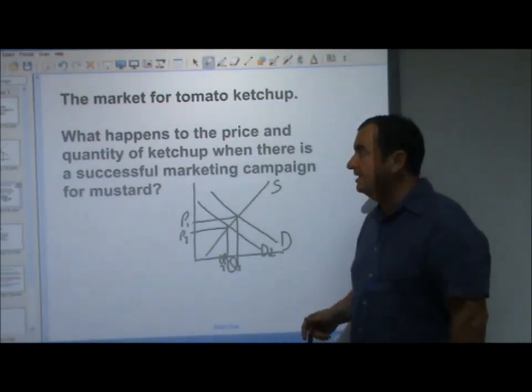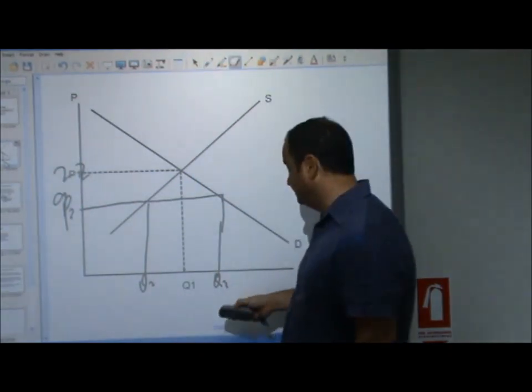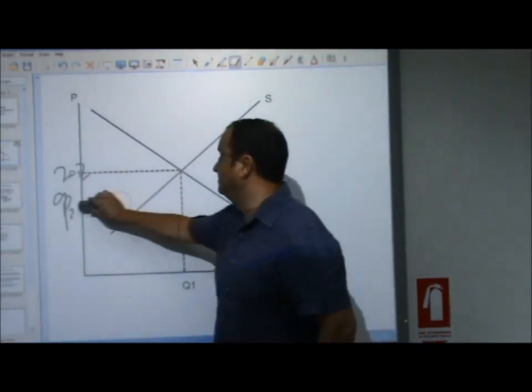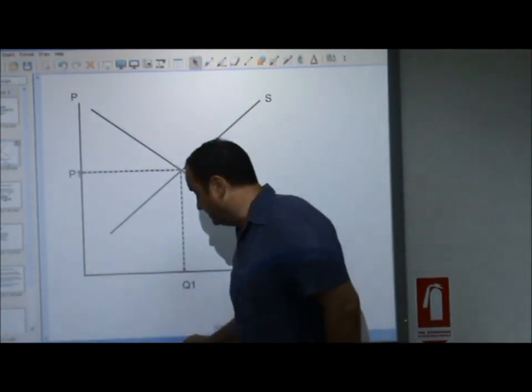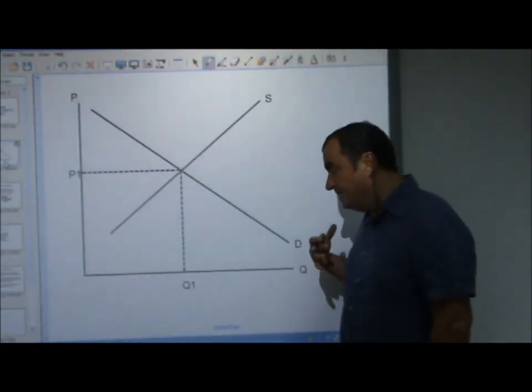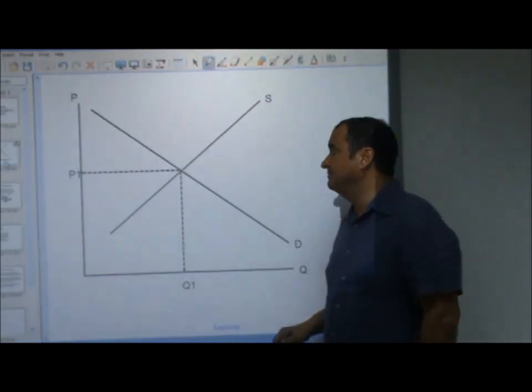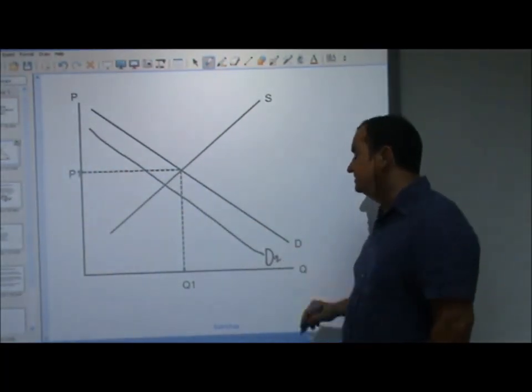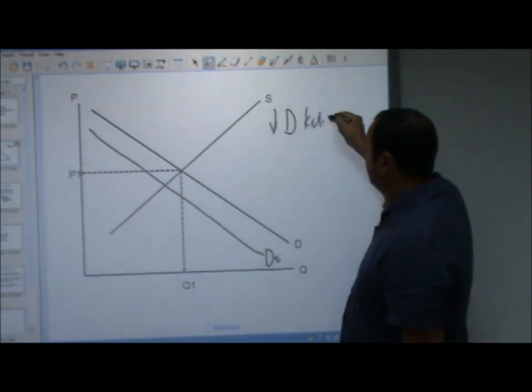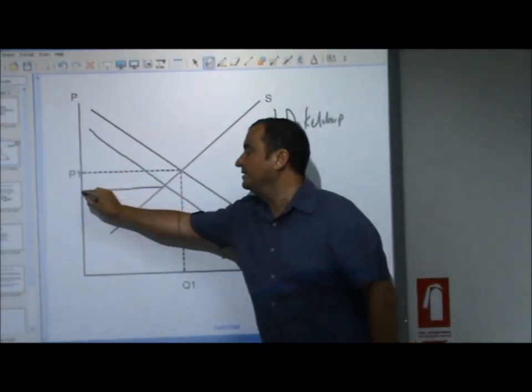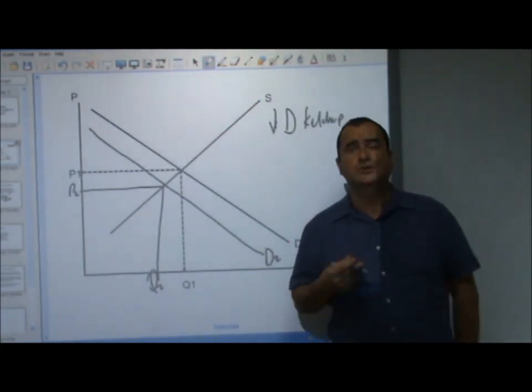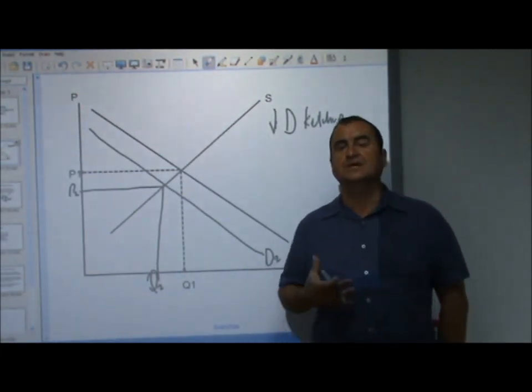In the ketchup market, because of the successful advertising marketing campaign for mustard, the demand for ketchup fell. We say there has been a fall in demand for ketchup. This is the new equilibrium point. A new price, P2. A new quantity, Q2. Has supply changed? No. Quantity supplied has changed as a result of the falling demand.